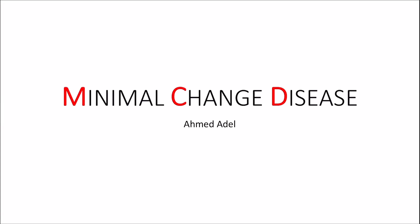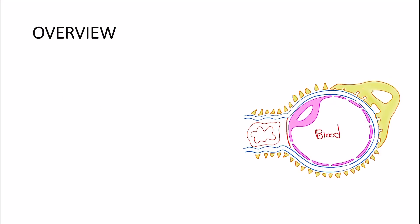Welcome back to our nephrology series. In this video we're going to talk about minimal change disease. This slide shows a capillary within the glomerulus, which is the site in the kidney where blood gets filtered. For the blood to be filtered it has to move across this glomerular filtration barrier in order to become the filtrate. The filtrate eventually becomes urine.